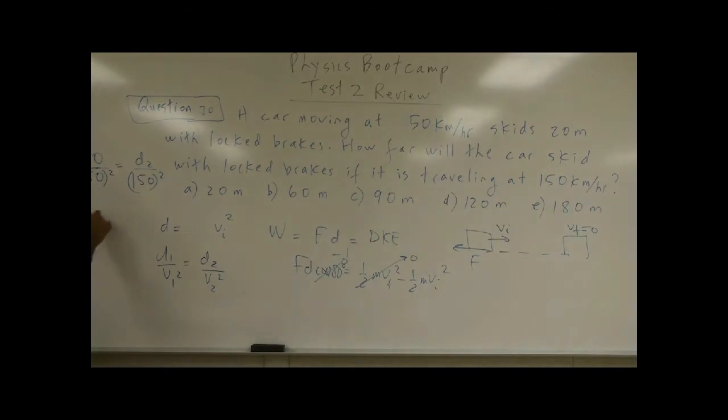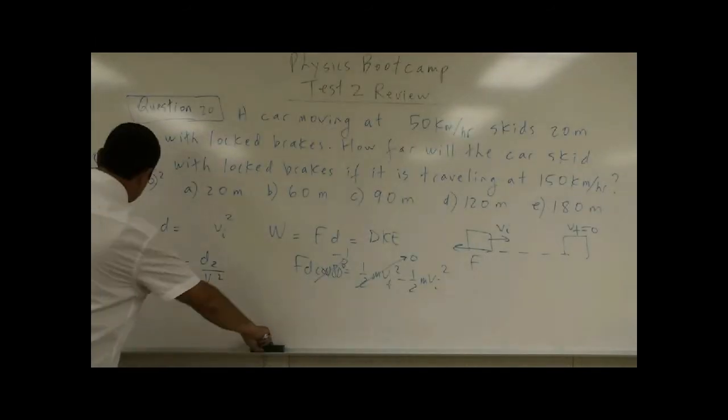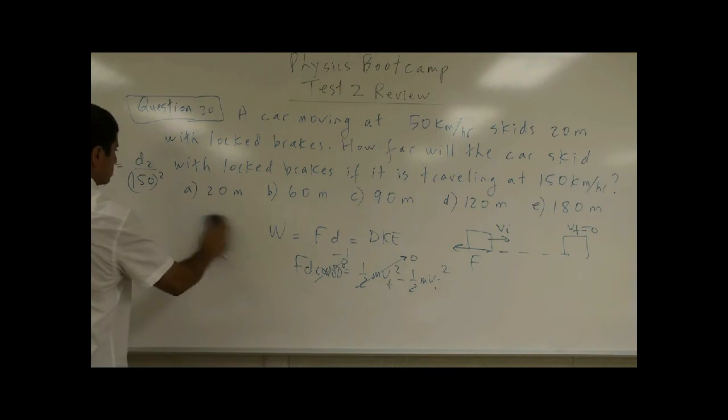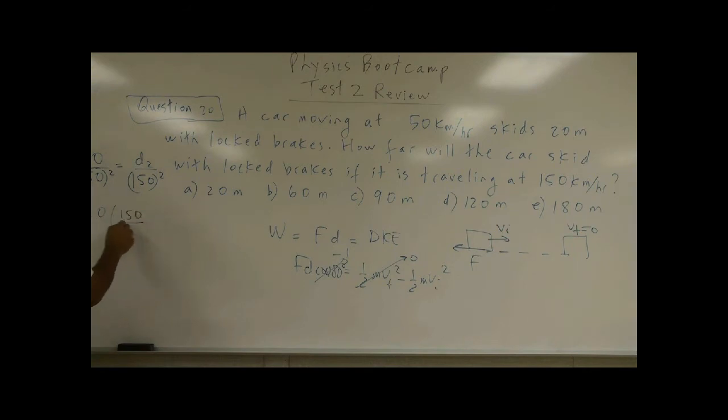The 150 I can cross multiply here, right? And we get what? 20 times what? I can take 150 and put it over 50 and I can square it D2. Right?